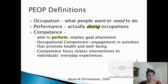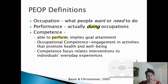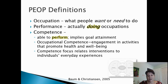The model includes the World Health Organization definition of occupation: it's what people want or need to do. Performance is where people actually carry out those occupations. Competence is not necessarily completing the occupation, but having the ability to perform and implies the person has goal attainment — they're able to attain their goal and engage in activities that promote health and well-being. This relates to us providing interventions that fit within an individual's everyday experiences, so our interventions have to be focused on what the client needs for those everyday experiences.